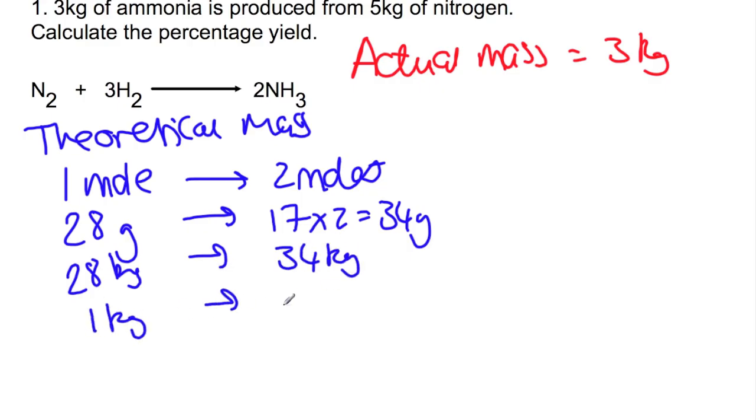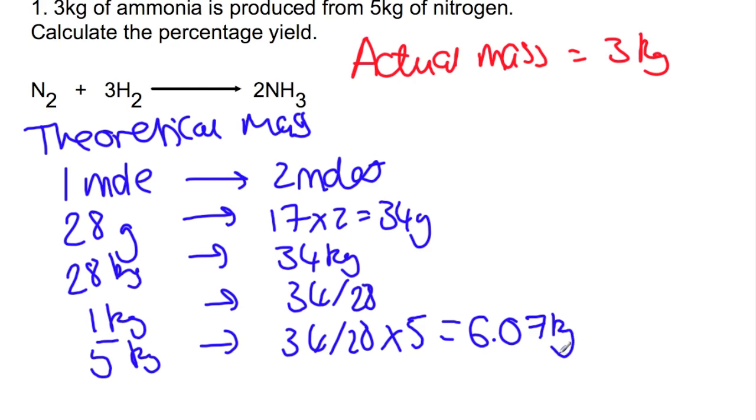1 kilogram would give you 34 divided by 28, and 5 kilograms would give you 34 divided by 28 multiplied by 5, which is 6.07 kilograms. This would be your theoretical mass that we put into the equation. So we have 3 kilograms divided by 6.07, all times 100, to give you a percentage yield of 49%.